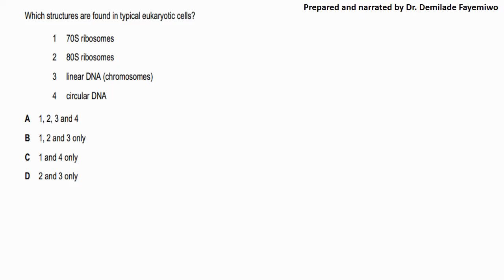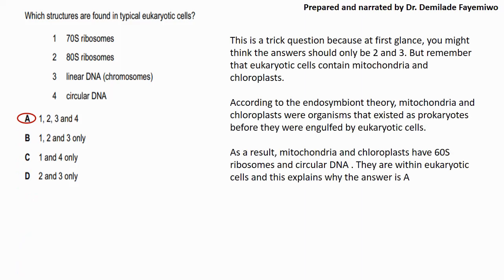The temptation with this question would be to say that the answer is D. But the actual answer is A. And I will explain this to you. This is a trick question because when you look at it, you think to yourself in a typical eukaryotic cell you have 80S ribosomes and you also have linear DNA.